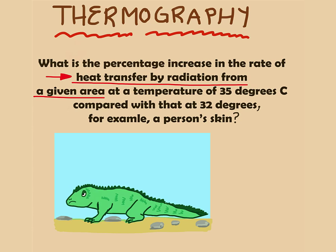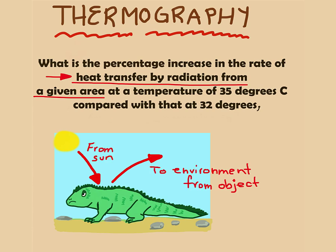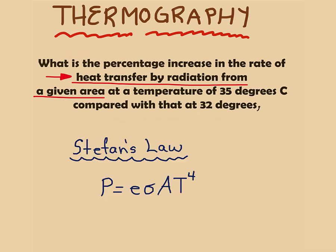To understand this, say we have a lizard. The lizard gets radiation from the sun and the lizard emits radiation into the atmosphere in the form of heat. Now that we know this, we can go back to answer the question.